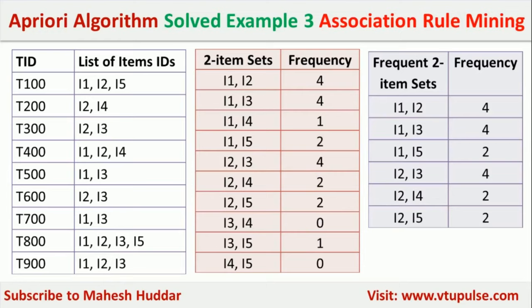This gives us six frequent two-itemsets: I1-I2, I1-I3, I1-I5, I2-I3, I2-I4, and I2-I5, with their respective frequencies written.